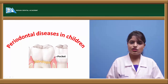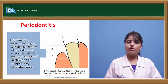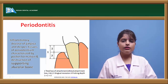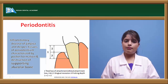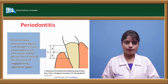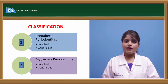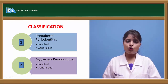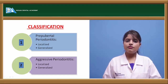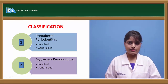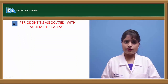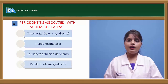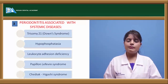Periodontitis involves loss of attachment — pocket formation and destruction of the supportive tissues including the alveolar bone and teeth. Periodontal diseases in children are classified into prepubertal periodontitis and aggressive periodontitis, each further divided into localized and generalized types. Periodontitis may also be associated with systemic diseases such as Down syndrome, hypophosphatasia, leukocyte adhesion deficiency, Papillon-Lefèvre syndrome, and Chédiak-Higashi syndrome.